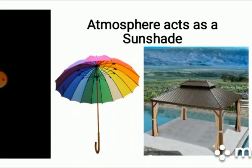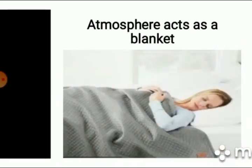Atmosphere acts as a sunshade. Sunshade is something used as a protection from the rays of the sun. For example, umbrella and canopies are used as a sunshade. The same way, atmosphere prevents the earth from becoming too hot during the daytime.